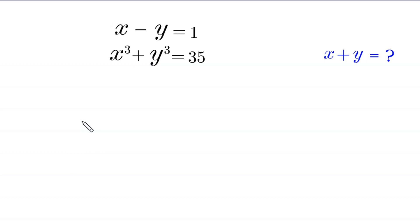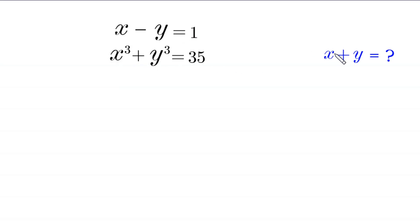Hello everyone, welcome to how to solve this very nice system of equations. x minus y is equal to 1, and x cubed plus y cubed is equal to 35. Our job is to find all possible values of x plus y. So let's start.